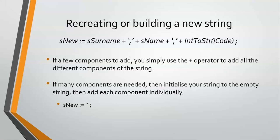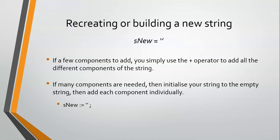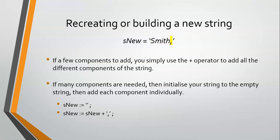We would say S-new equals the empty string — just quote quote with nothing in between, not even a space. So S-new has nothing in it. Then when we get to things we want to add, we say S-new equals whatever's currently in S-new plus the surname. It'll take the empty string, add on the surname field, and make that the new S-new. Then we would say: add a comma onto S-new — take whatever's in S-new, which is Smith, add a comma onto it, and make that the new S-new. So S-new is now equal to Smith with a comma, and so on.